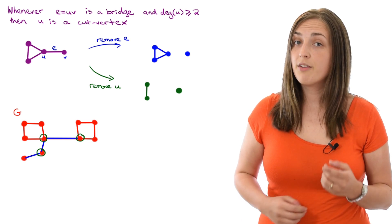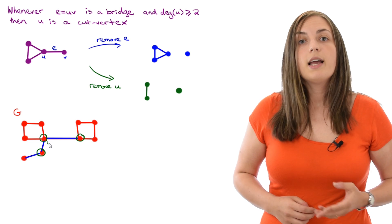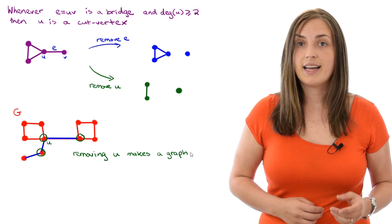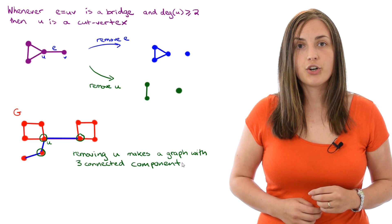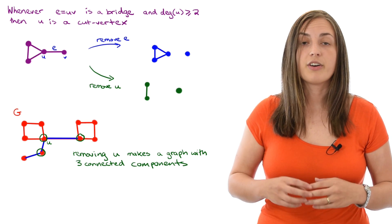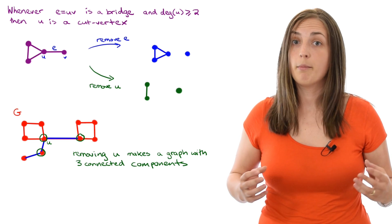Now if you take a look at one of the cut vertices, u, and you remove it, you'll notice that you end up with three connected components. This is what I mentioned earlier. Removing a cut vertex can create many connected components, rather than just one more.